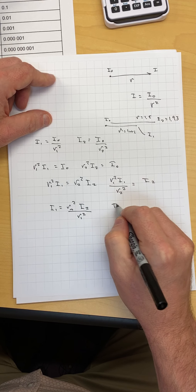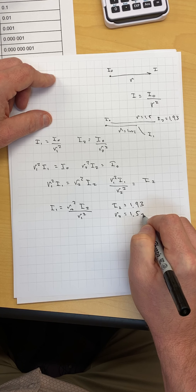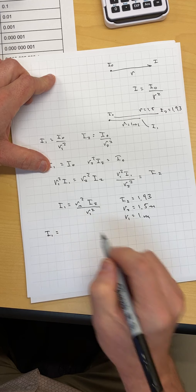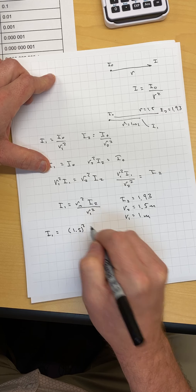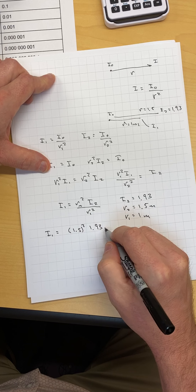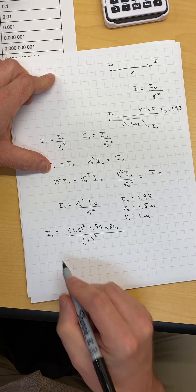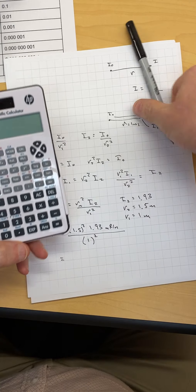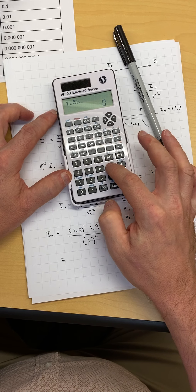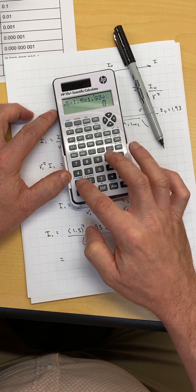So now I2 is 1.93, R2 is equal to 1.5 meters, R1 is equal to 1 meter. So intensity at position 1 is equal to 1.5 squared times 1.93. There's meters in there, so that's meters squared. This is milliroentgen per hour divided by 1 meter squared is equal to, get the calculator out.